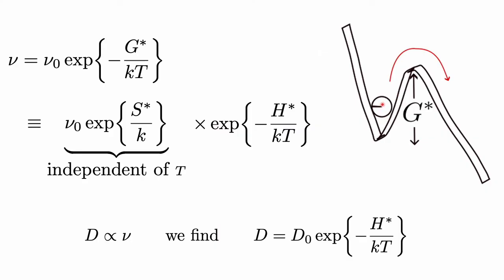Here is an atom attempting to squeeze past other atoms, faced with a barrier. The height of that barrier is the activation free energy G*. The probability of a successful jump is exponential of minus G* over kT, and the frequency with which it attempts to get over this barrier is ν₀. So the frequency of successful jumps is simply ν₀ times exp(−G*/kT).